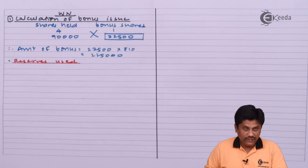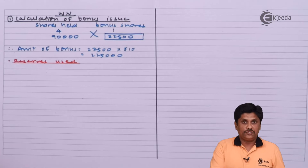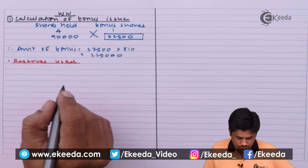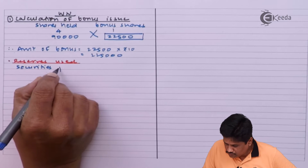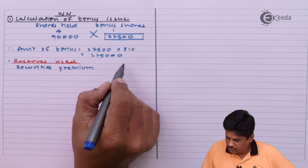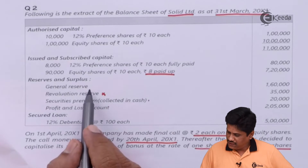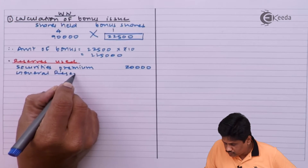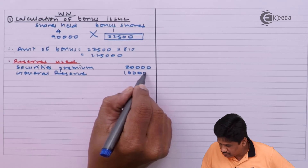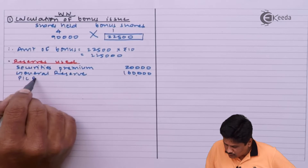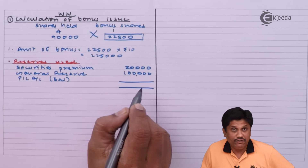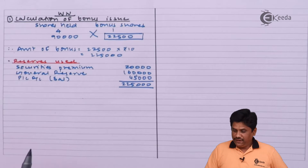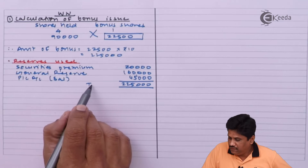How resources will be utilized: firstly we will use Capital Redemption Reserve — but if you see the question, there is no CRR. Next preference goes to Securities Premium — so I will use Securities Premium. After that we have two free reserves: General Reserve and P&L Account. Firstly I will use General Reserve, and for the remaining balance requirement we will use the Profit and Loss Account. Our total requirement is ₹2,25,000, and ₹45,000 is the balance amount we will take from P&L.